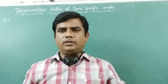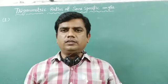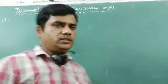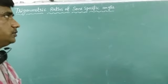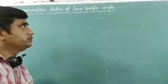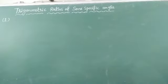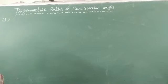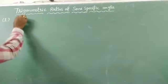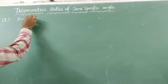Welcome to KR Tutorials. In this video we are going to discuss trigonometric ratios of some specific angles — 6 trigonometric ratio values at specific angles. The specific angles we are taking are 0 degrees, 30 degrees, 45 degrees, 60 degrees, and 90 degrees. First, let us see when the angle theta equals 45 degrees.